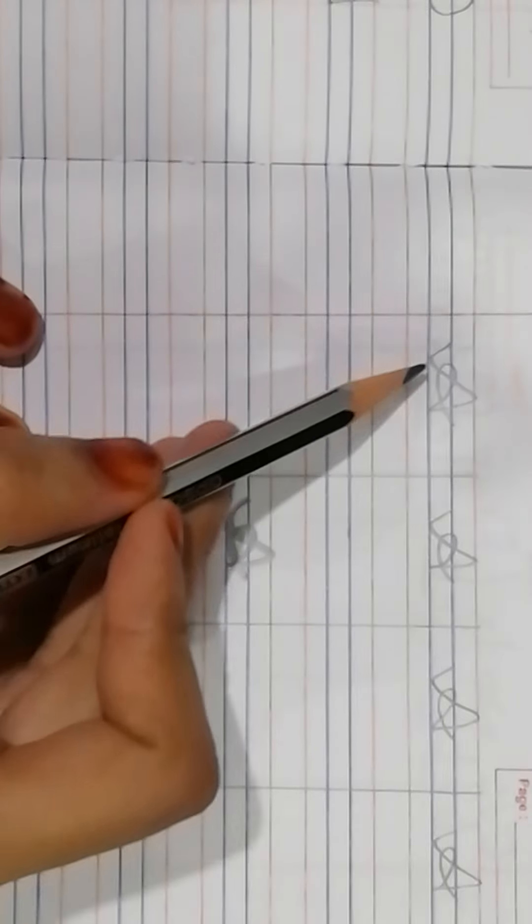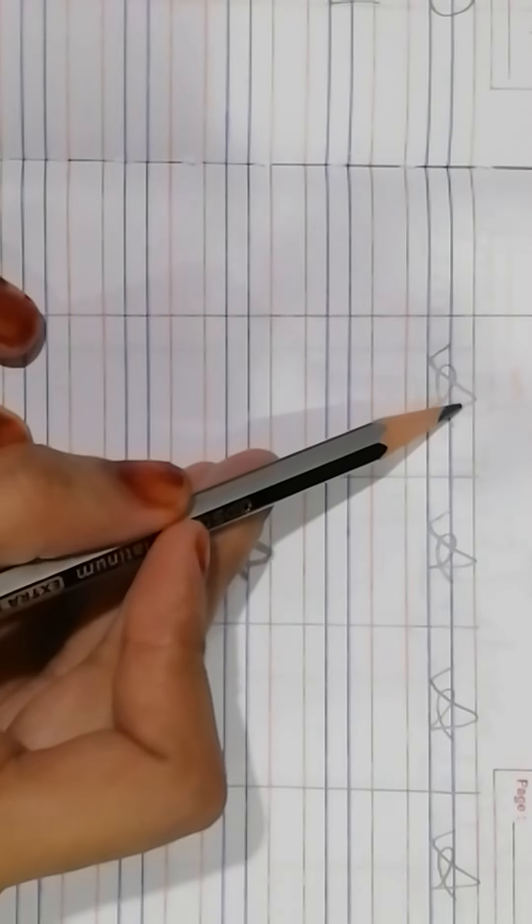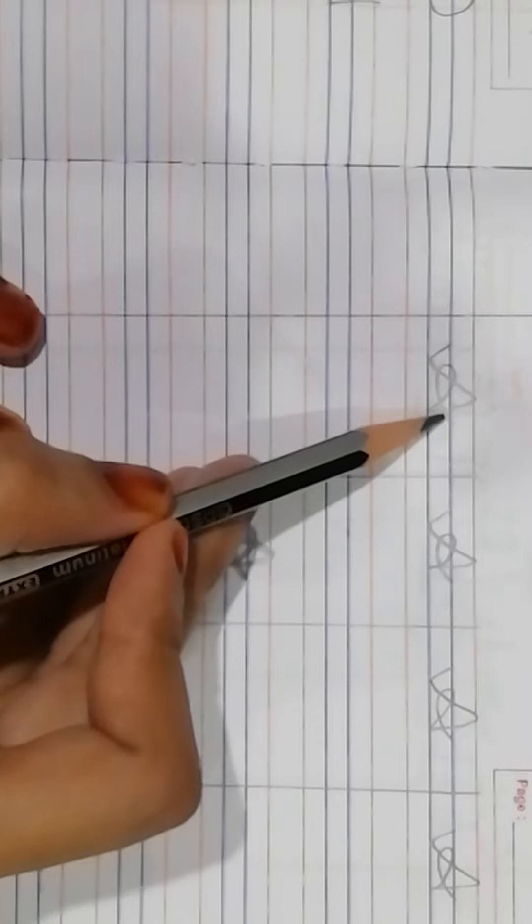How do you write in cursive letter A? Neachee se upar, upar se neachee, then turn karke upar.